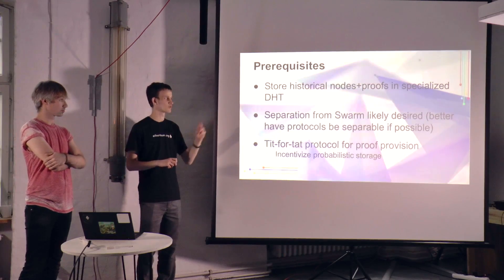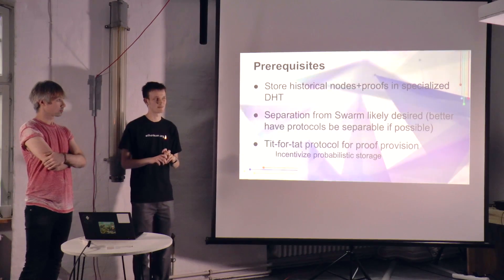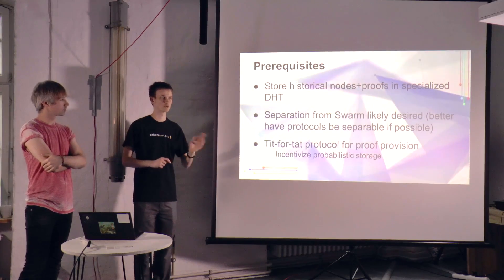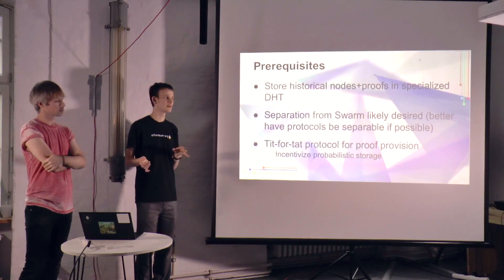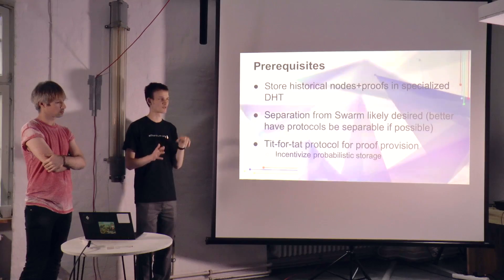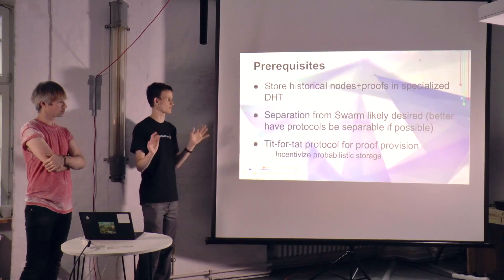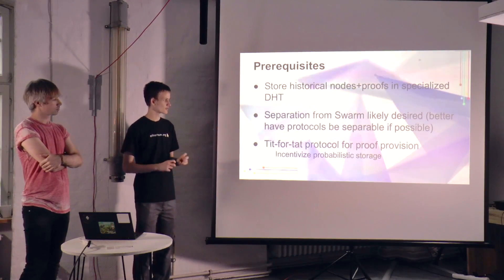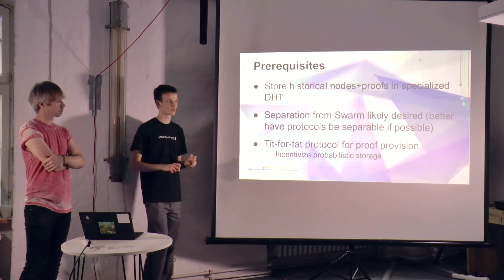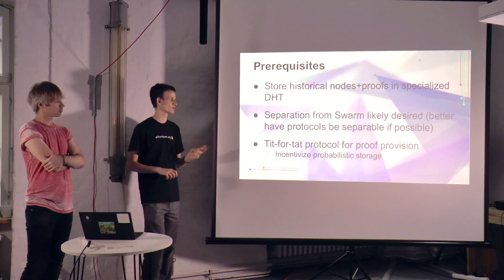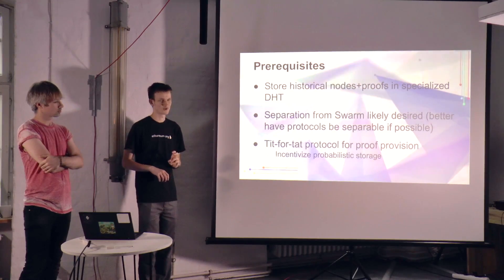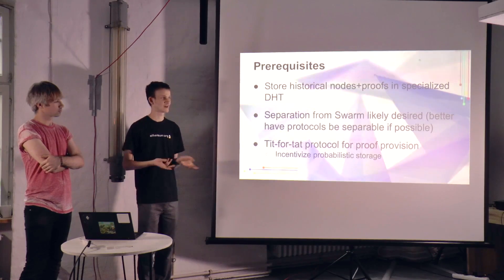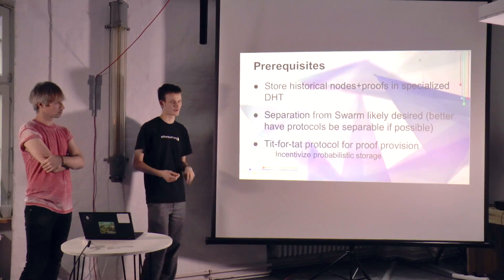We want to store everything that light nodes are going to be storing by themselves in this kind of specialized DHT. We don't necessarily want to mix it with Swarm, because it's better to have the different protocols be separate. People should be able to use Ethereum even if they don't care about Whisper and Swarm; they should be able to use Swarm if they don't care about Whisper, and so forth. There's also a possibility of making a tit-for-tat protocol where light nodes can give each other proofs, which helps incentivize nodes to actually store things.